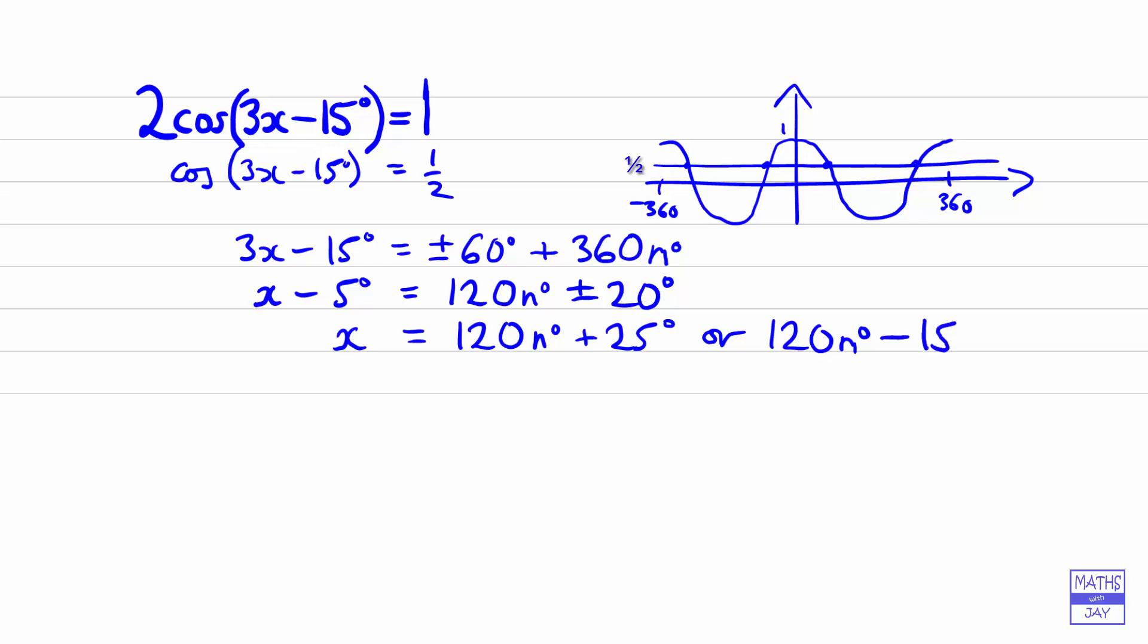So that's the answer to the question. You might like to check—for example, you could check n is 0 would be a good one to start with. So if you're checking n is 0, you would be checking that x equals 25 and x equals negative 15 give the correct solutions.